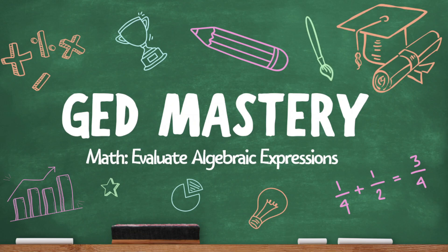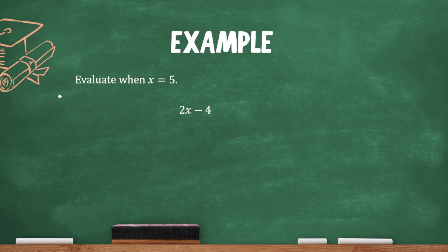Welcome to GED Mastery. Let's evaluate algebraic expressions. Here's a quick example to start out. It says evaluate when x equals 5, and then we have an expression here, 2x minus 4.